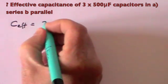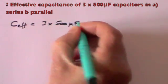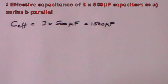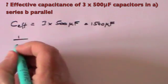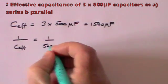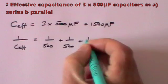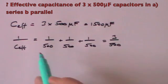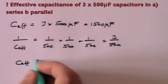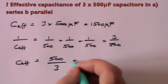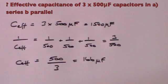So C effective for three capacitors in parallel is simply 500 plus 500 plus 500 microfarads, which gives 1500 microfarads. If on the other hand you want to know the effective capacitance in series, then 1 over C effective equals 1 over 500 plus 1 over 500 plus 1 over 500, which is 3 over 500. So C effective equals 500 divided by 3, which comes to approximately 166 microfarads.